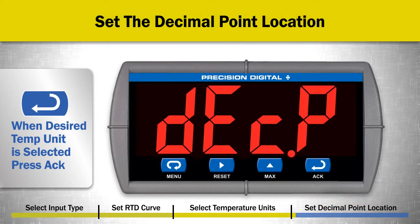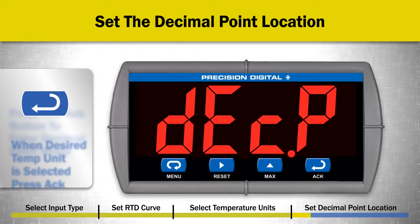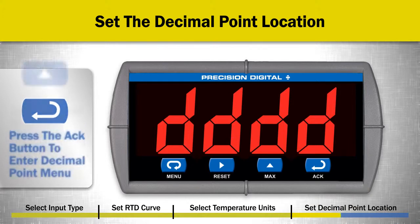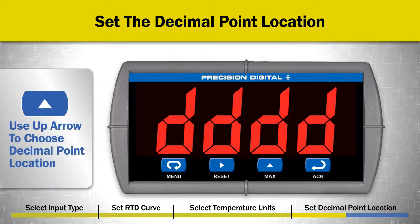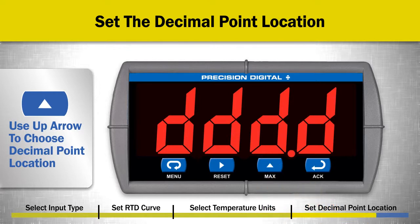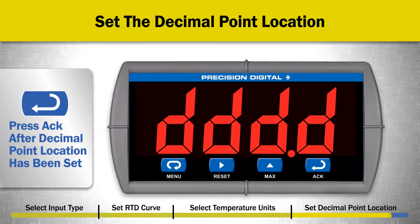Next, set the decimal point location. To do this, press the ACK button to enter the decimal point menu. Use the up arrow button to choose between zero or one decimal point location. Press the ACK button after the decimal point location has been set.